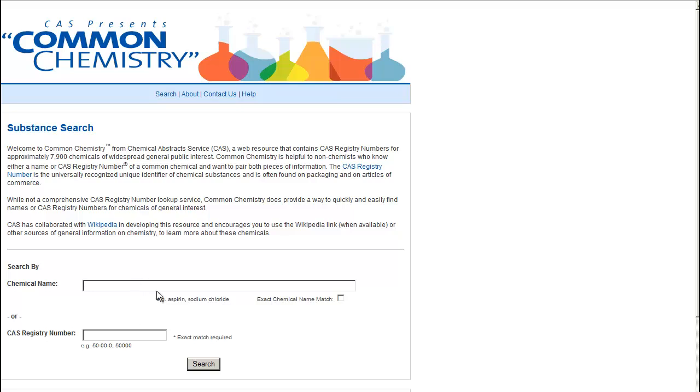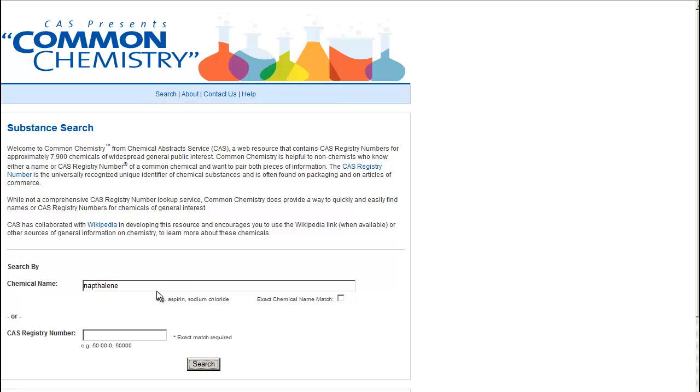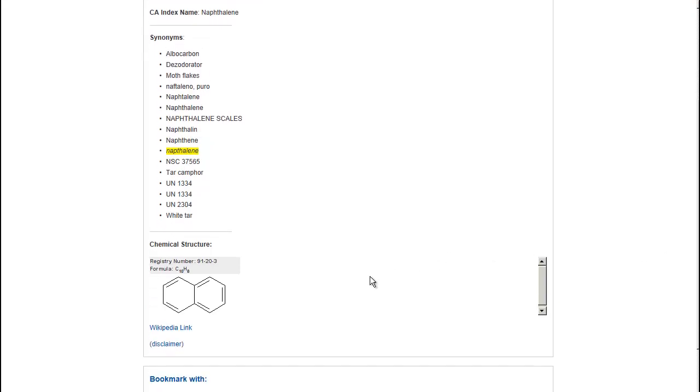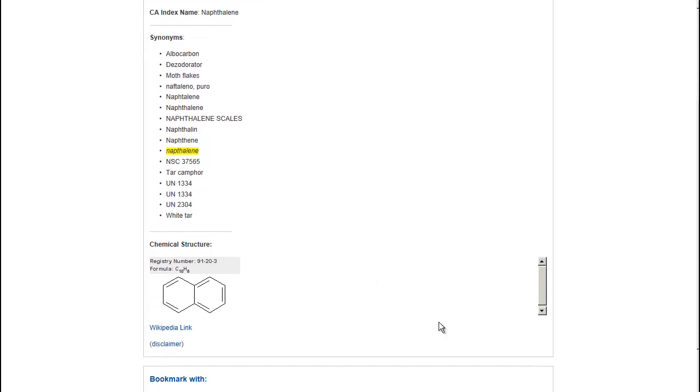In Common Chemistry, enter the name of your chemical. You will see a list of results, including your chemical and any other compounds that contain your chemical. Click on the registry number for your chemical, and you will see a page that displays the registry number, synonyms, molecular formula, and chemical structure.